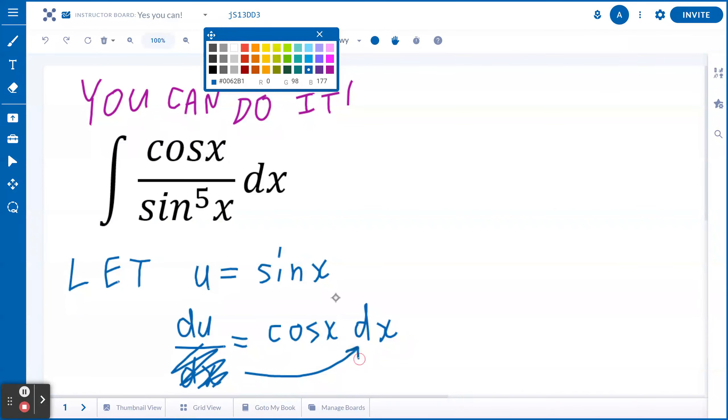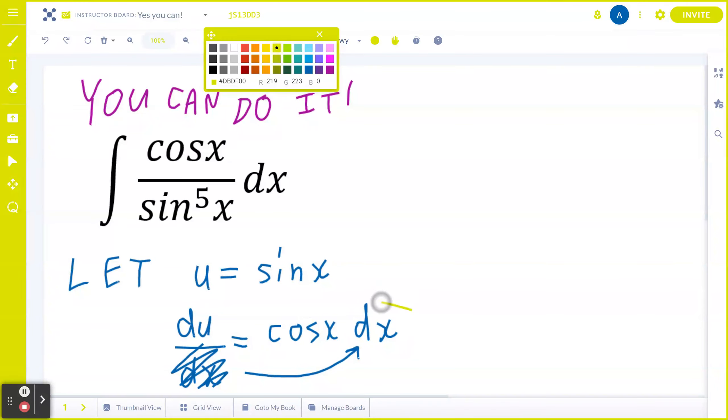So you basically bring it to the other side. And if I highlight this in a slightly different color, I hope you can see we can rewrite cosine x dx in terms of du in a moment. And likewise, if you think about sine x, we're going to rewrite that as u.